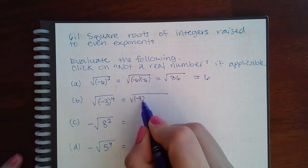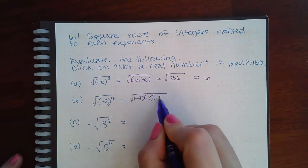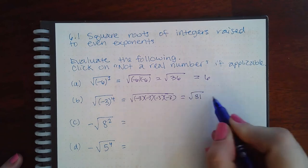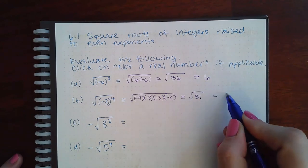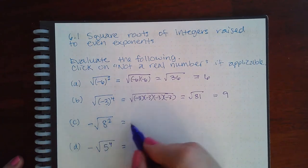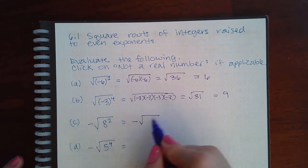Here same thing with this one, this is going to be negative 3 times negative 3 times negative 3 times negative 3, which turns out to be a positive 81, and I can take the square root of 81, it's just 9.